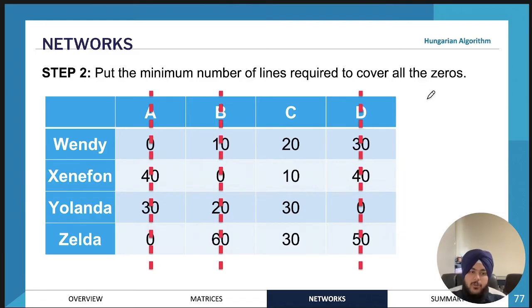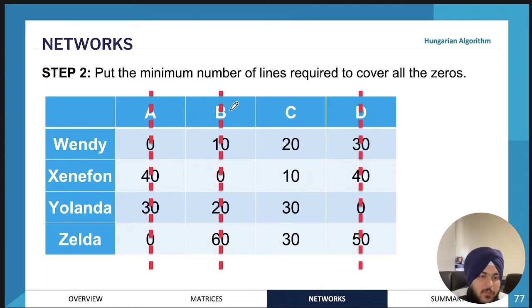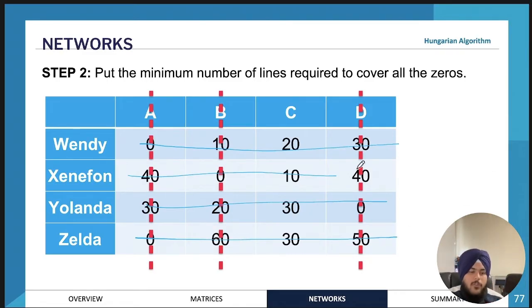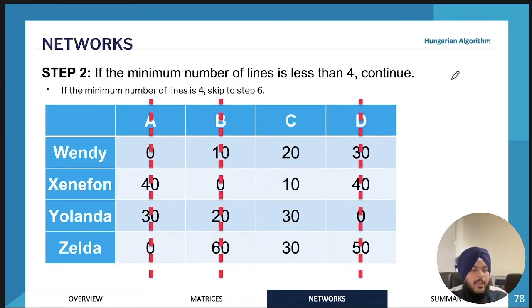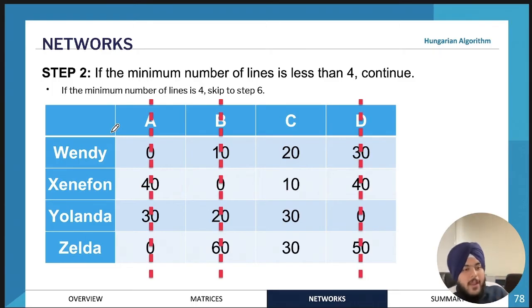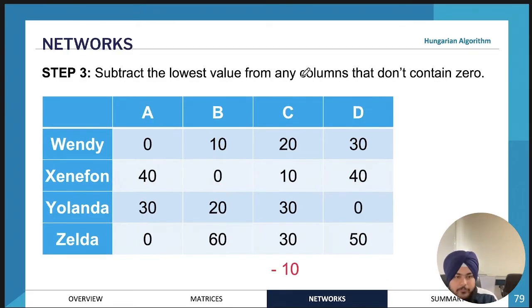Step two is to draw the minimum number of lines required to cover all the zeros. You must use the fewest lines possible — for instance, one line can cover two zeros at once, so don't use more lines than necessary. Once you've drawn the lines, if the number of lines is less than four (since we have four people and four tasks), continue to step three. If it equals four, you can skip to step six.